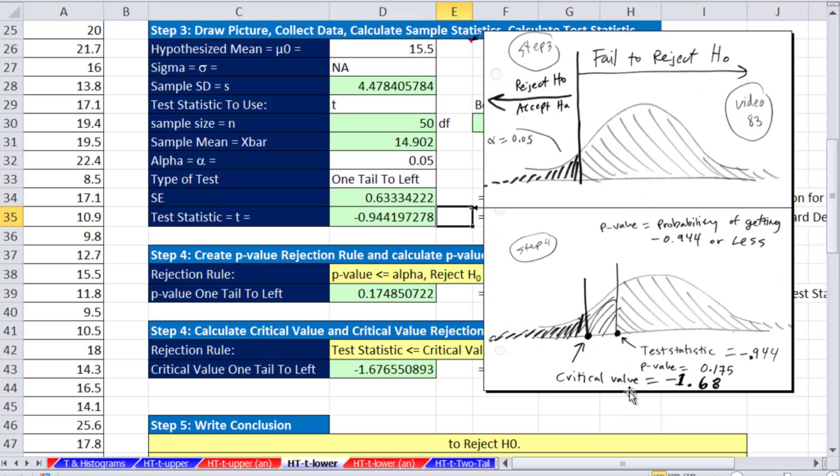If we're doing p-value, the p-value of getting minus 0.944 or less, that p-value is about 17.5%. Compare that directly to alpha, we fail to reject. Critical value, well our test statistic is up here, it's not past the hurdle, so we fail to reject.